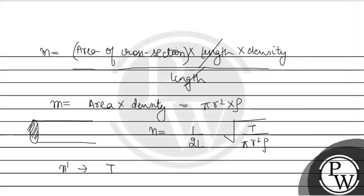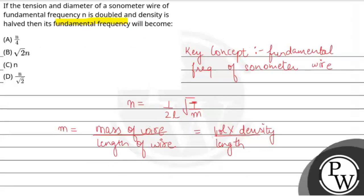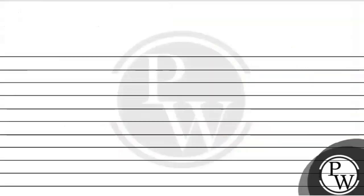When the tension is double, that is 2 times. The radius is the diameter. What is our initial radius? That is r prime. And the density that is rho prime is rho by 2. This is our question given. Now, we have to calculate the fundamental frequency.